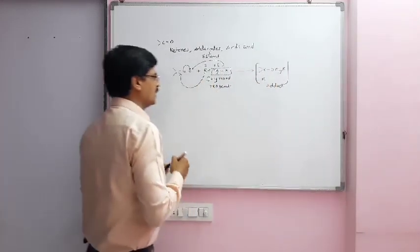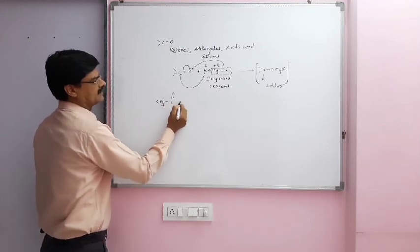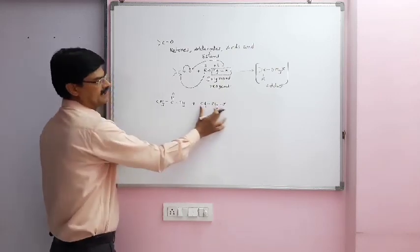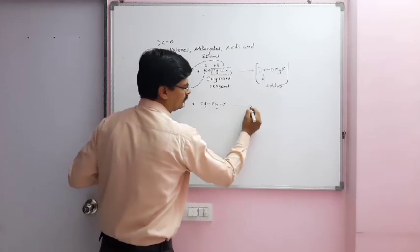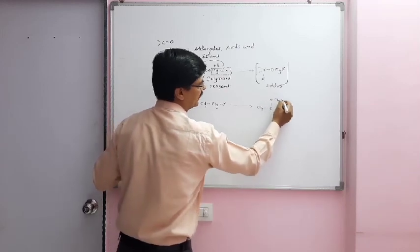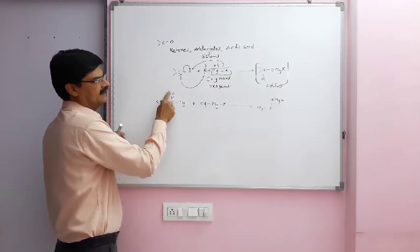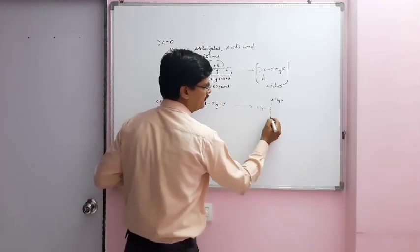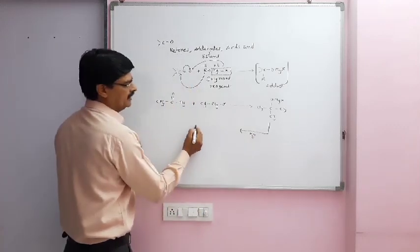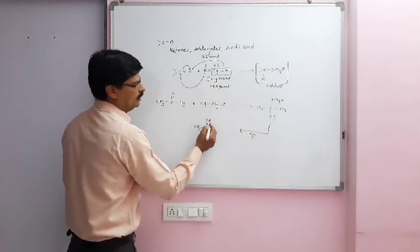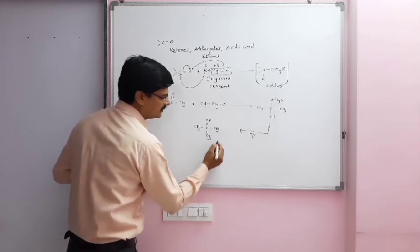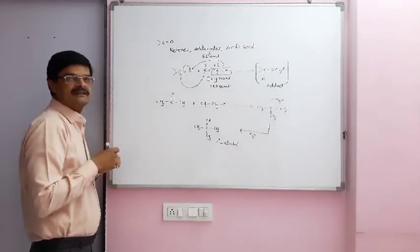Now one more case: if we have ketone, say CH3COCH3 plus CH3MgX (Grignard reagent), the addition product will be CH3-C(OMgX)(CH3)-CH3. Hydrolysis gives CH3-C(OH)(CH3)-CH3. The product alcohol obtained is tertiary (3-degree) alcohol, because the carbon is attached to three other carbon atoms.